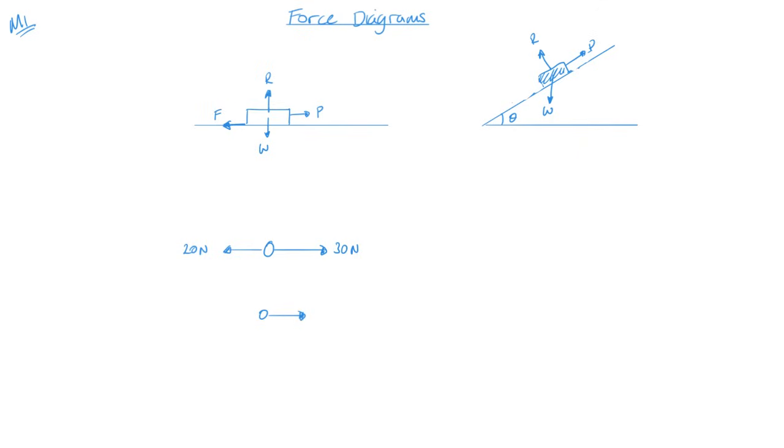And the resultant force is going to be 10 newtons, because 30 take away 20 gives me 10 left over. So this is called a resultant force and that is another thing that we are going to be looking at very briefly. So there's not much to this video, just a little look at force diagrams. So let's jump into the first example.